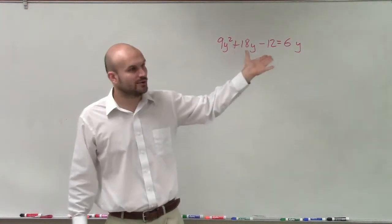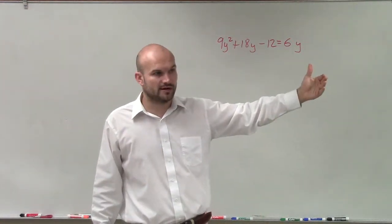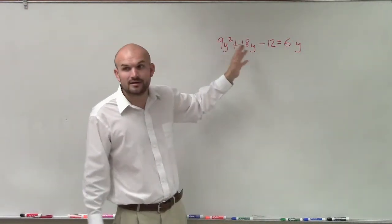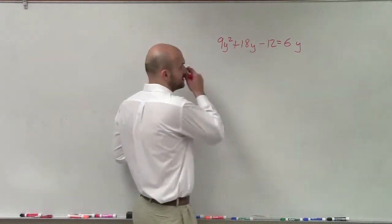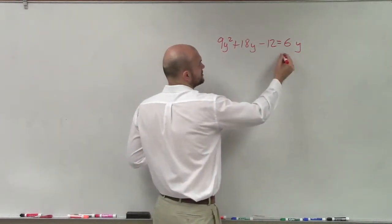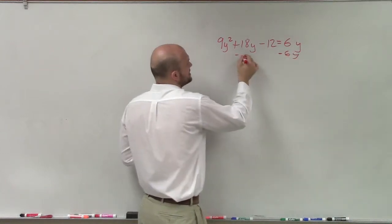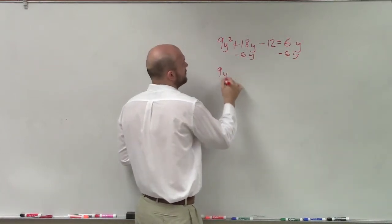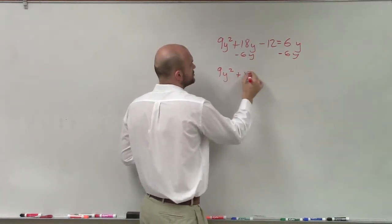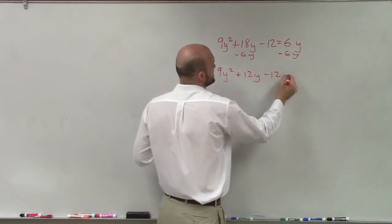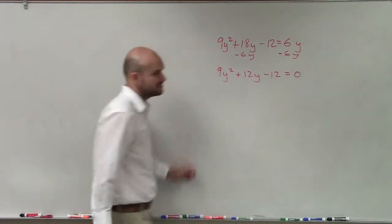Unless it's a linear equation and we can just solve for our variable, if we have a quadratic, we want to set it equal to zero so we can apply our factoring technique. So I'll subtract 6y on both sides. Therefore, I get 9y² + 12y - 12 = 0.